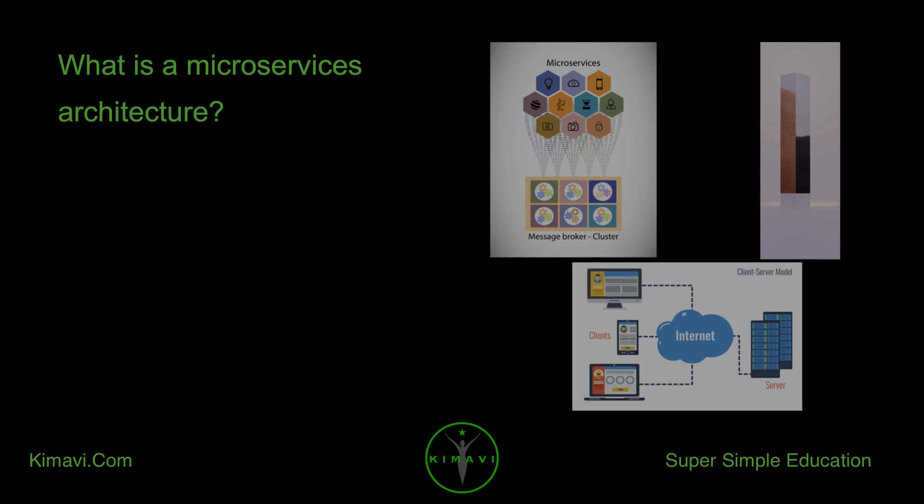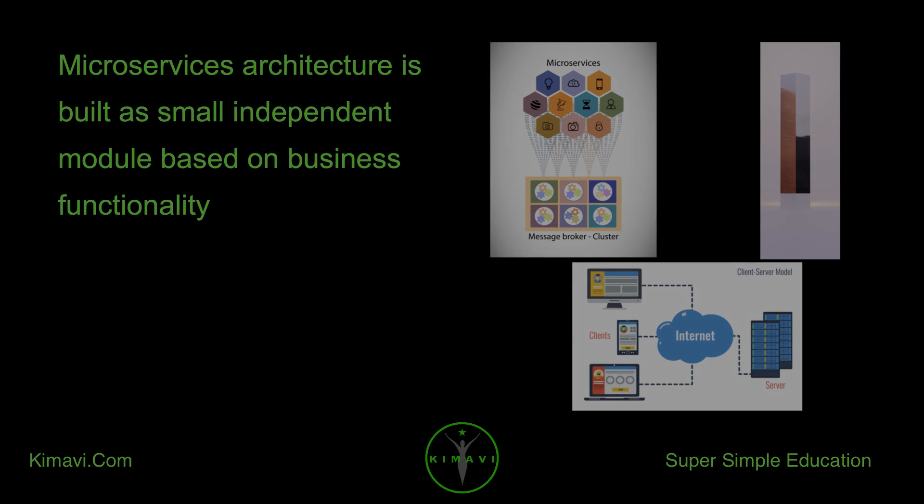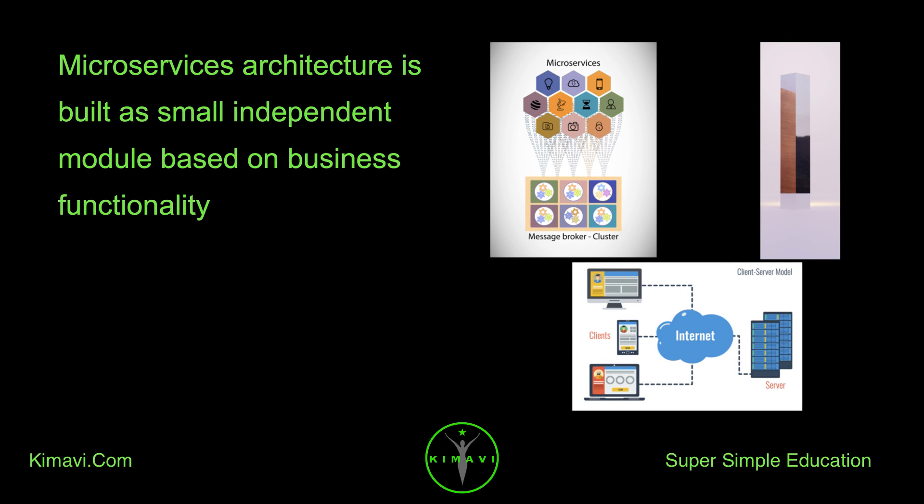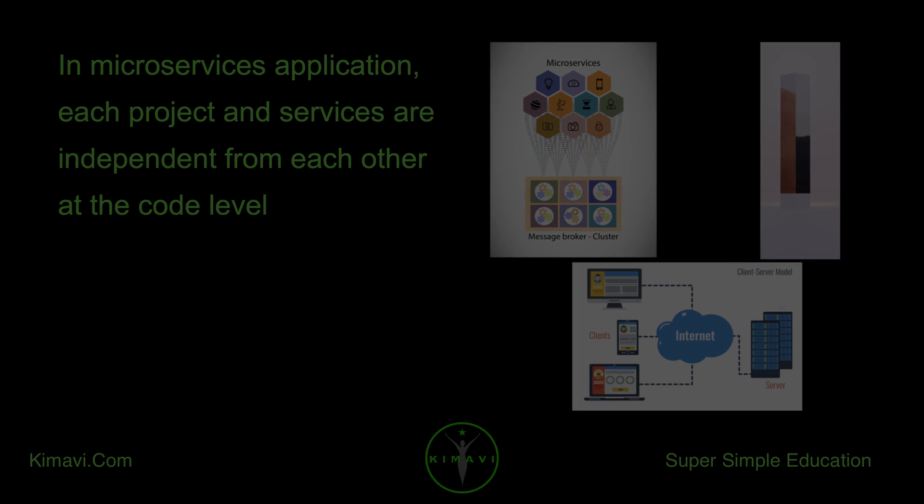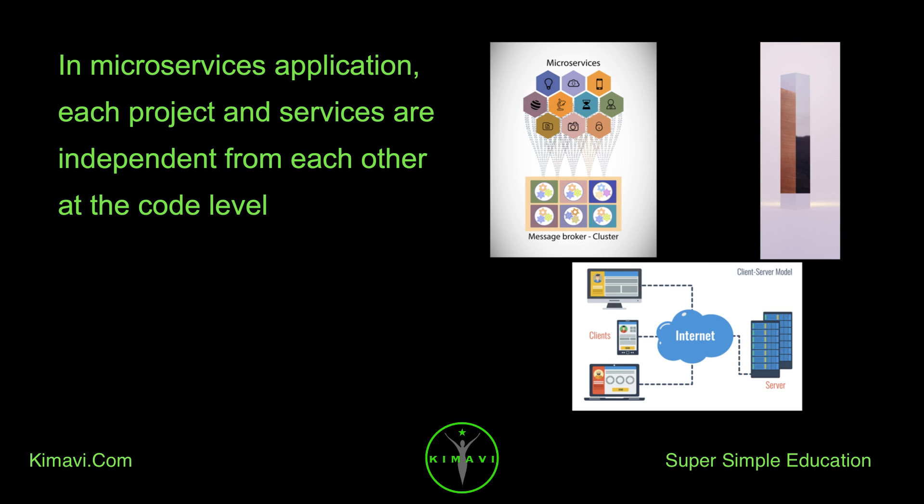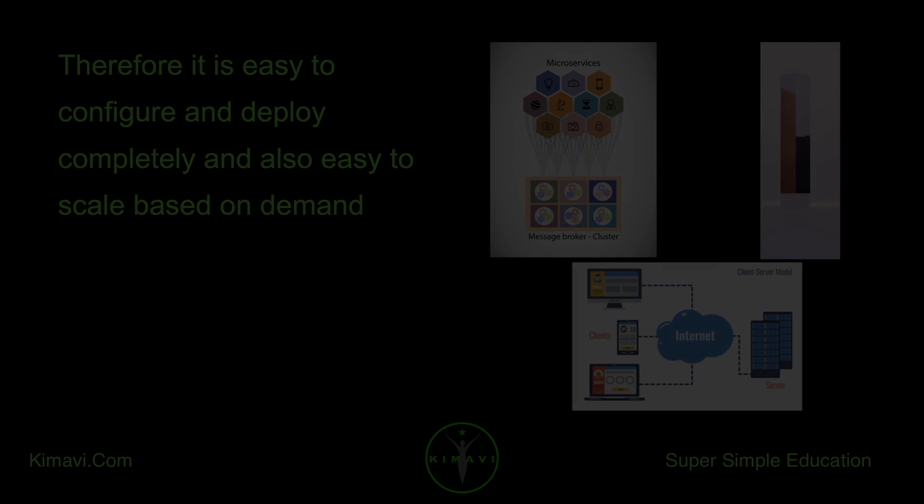What is a microservices architecture? Microservices architecture is built from small independent modules based on business functionality. In microservices applications, each project and service is independent from each other at the code level. Therefore, it is easy to configure and deploy completely and also easy to scale based on demand.